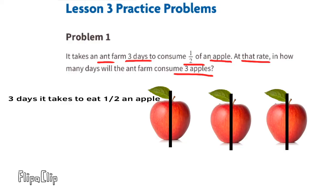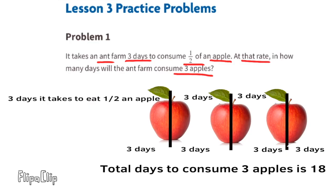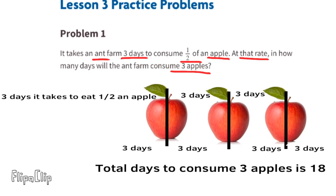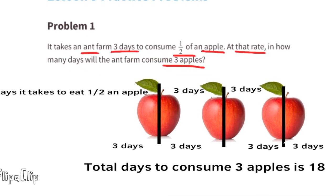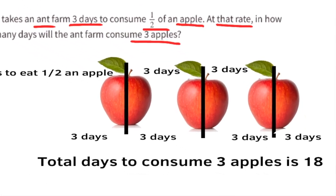In this illustration of three apples cut in half, each half represents three days. There are six halves, and six halves times three days equals 18 days. So it would take the ant farm a total of 18 days to consume three apples.